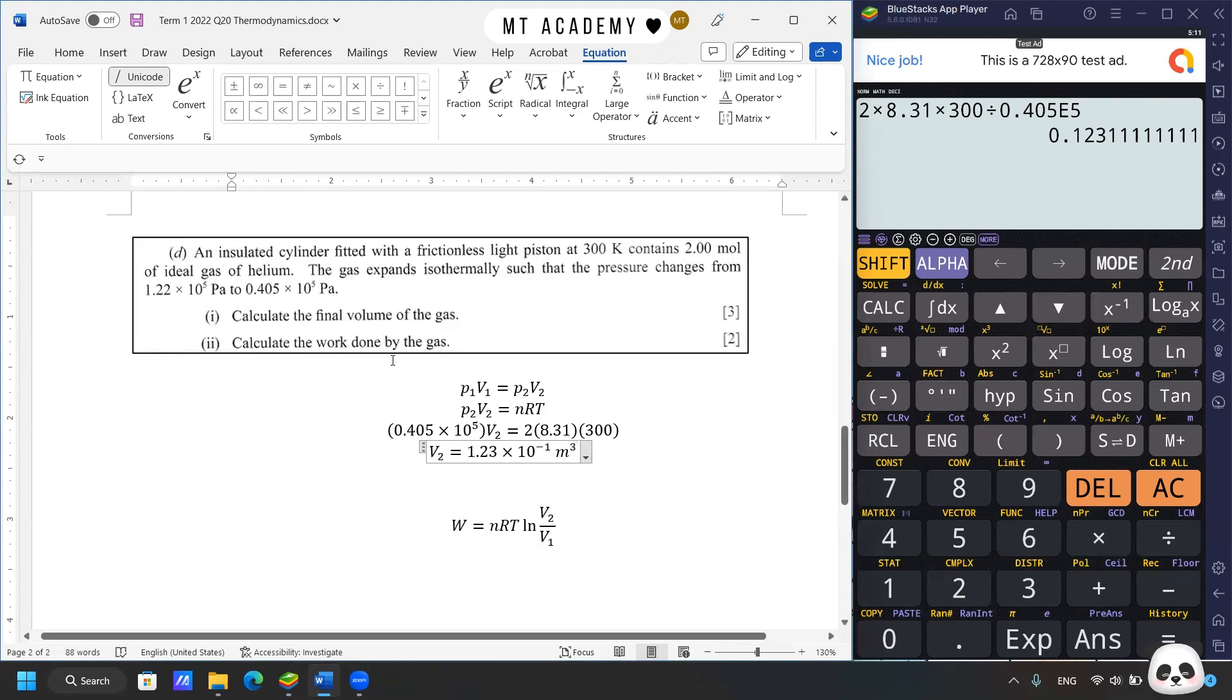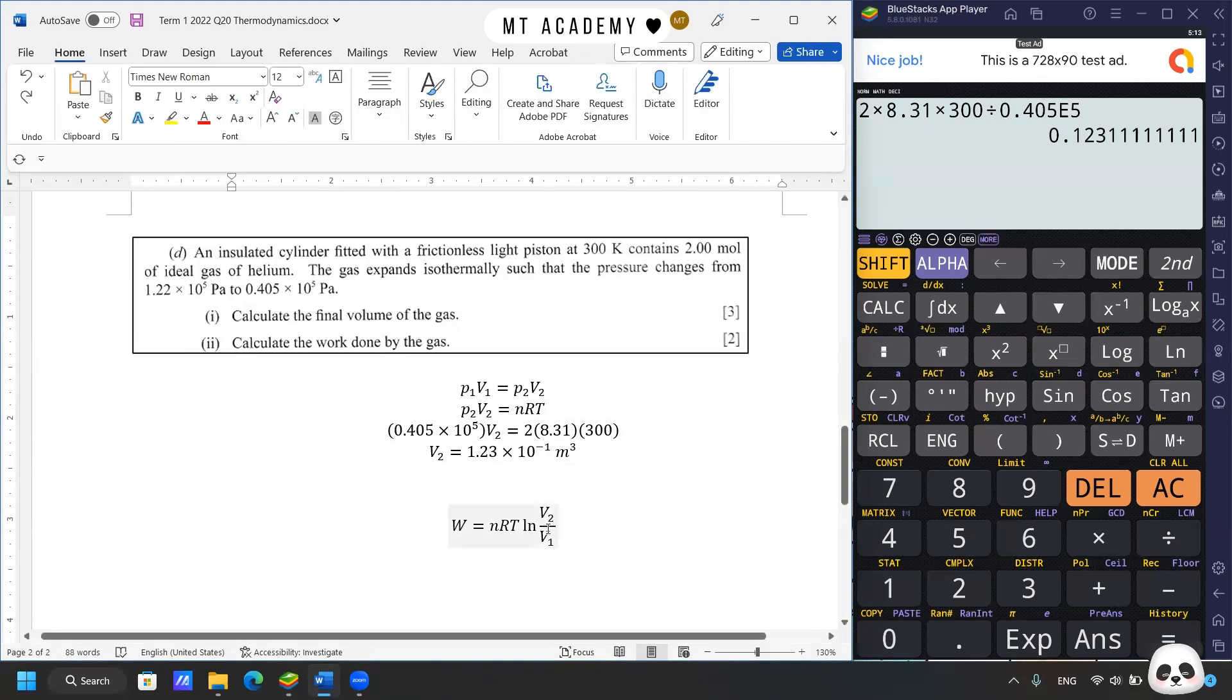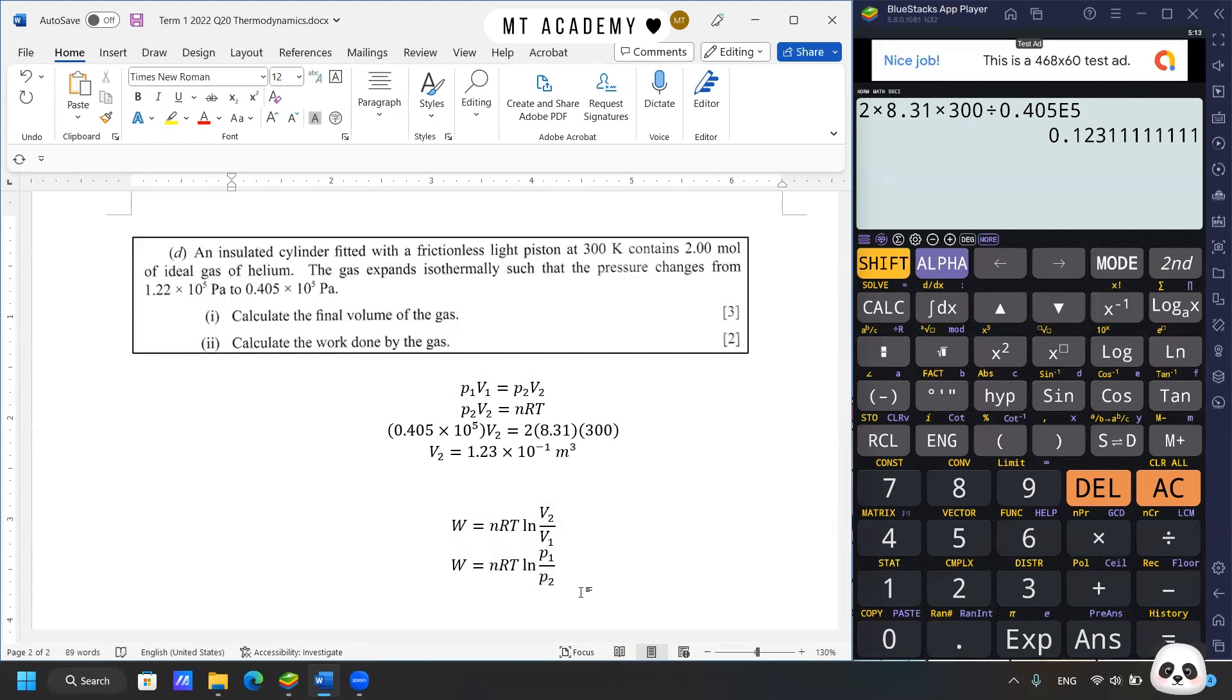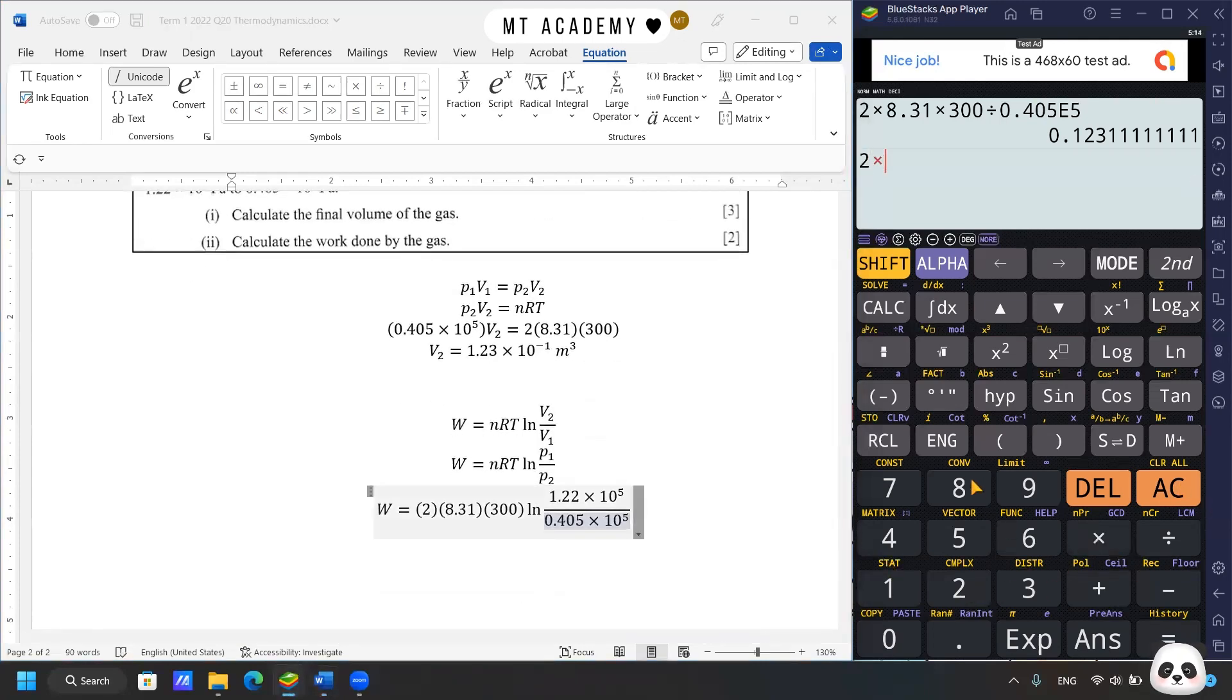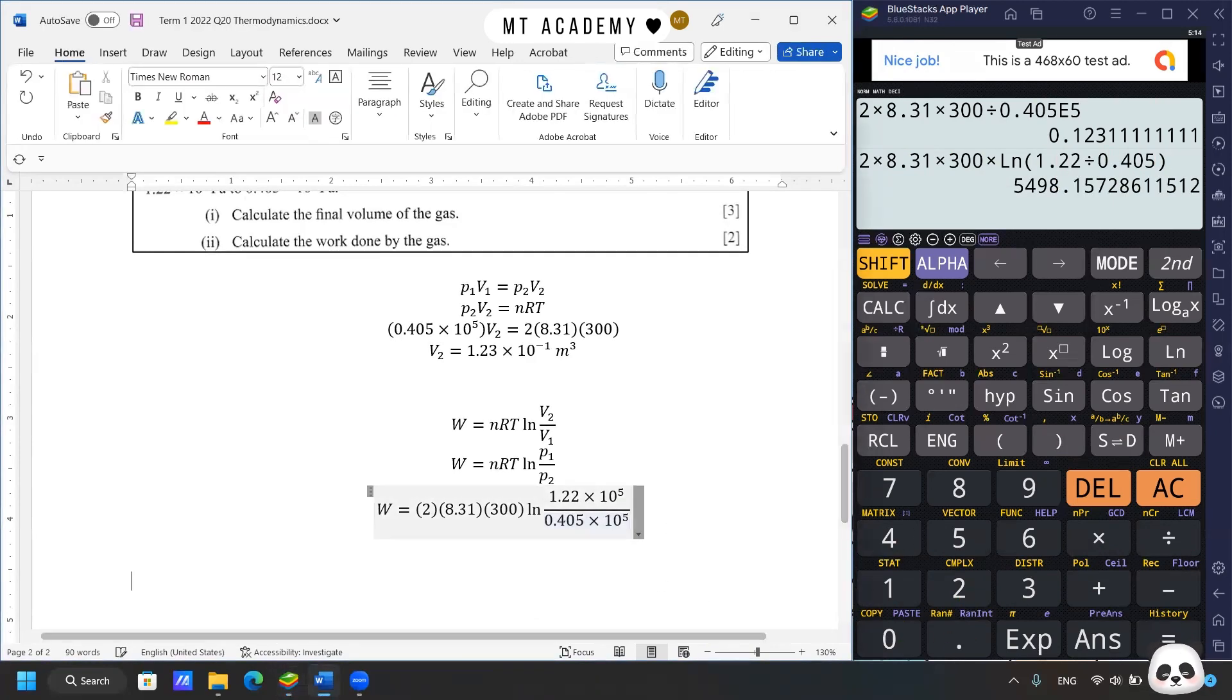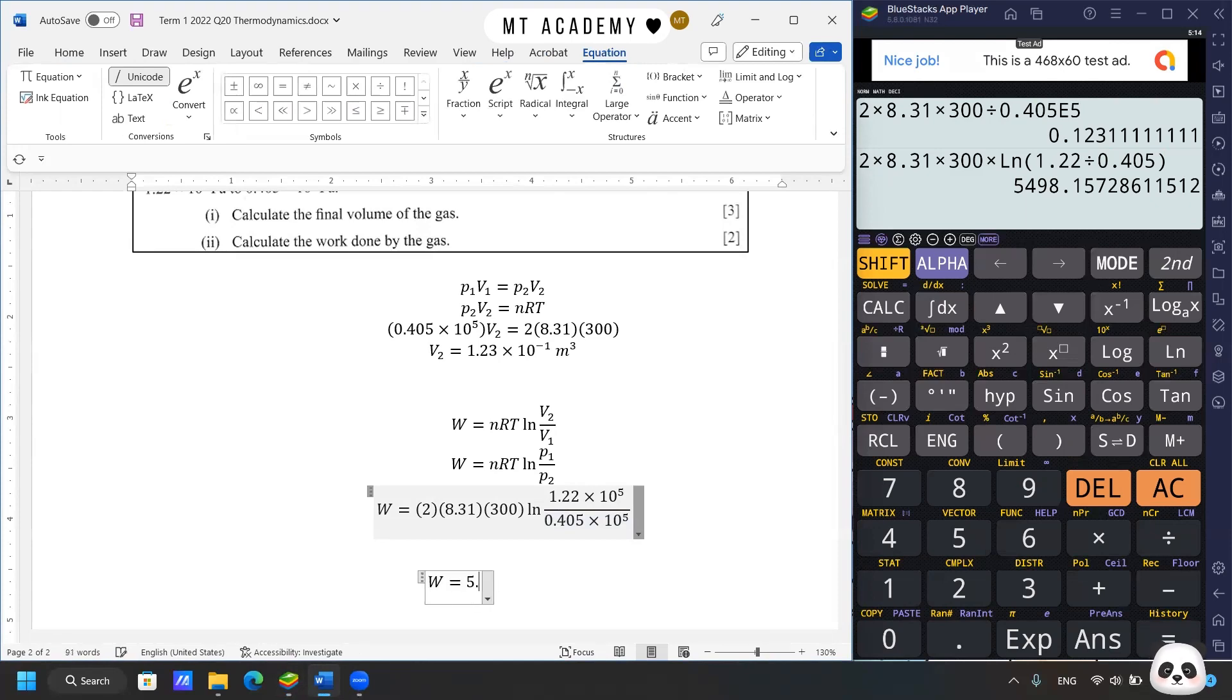Calculate the work done by the gas. The equation for work done is NRT ln(V₂/V₁). Since we don't have the initial volume, we can replace V₂/V₁ based on P₁V₁ equals P₂V₂, so we replace V₁/V₂ as P₁/P₂. We have number of moles as 2, gas constant 8.31, temperature 300 Kelvin, ln of initial pressure 1.22 times 10⁵ divided by final pressure 0.405 times 10⁵ Pascal. The work done by the gas is 5.5 kJ.